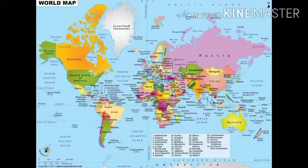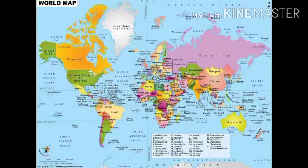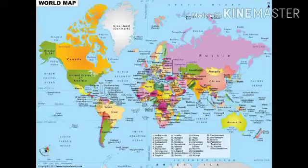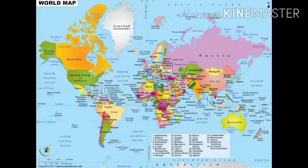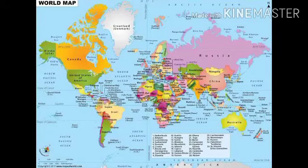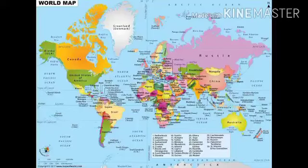Asia is the largest continent and it covers one third of the total area of the earth. The continent lies in the eastern hemisphere, and the Tropic of Cancer passes through it. Asia is separated from Europe by the Ural Mountains, and the combined landmass of Europe and Asia is called Eurasia. Asia is much larger than Europe.